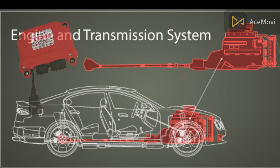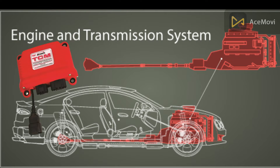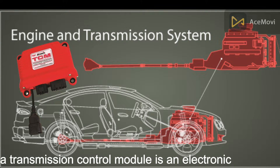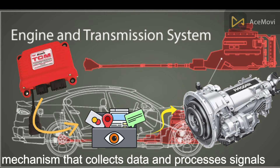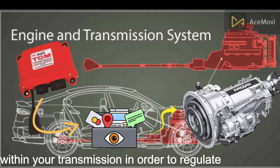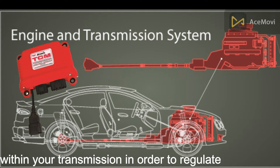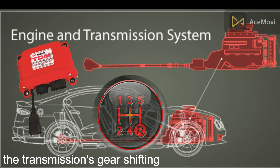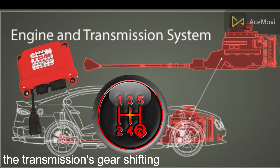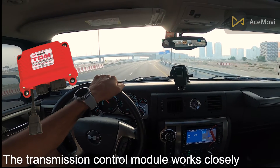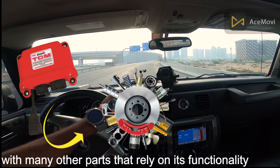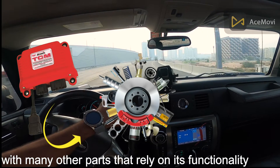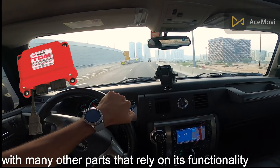A transmission control module is an electronic mechanism that collects data and processes signals within your transmission in order to regulate the transmission's gear shifting. The transmission control module works closely with many other parts that rely on its functionality.